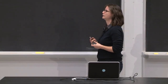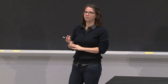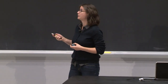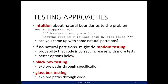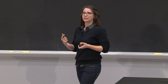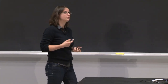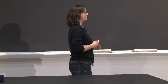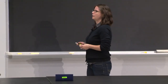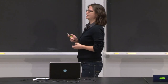What are some testing approaches? The first, most common with programs involving numbers, is figuring out natural boundaries — for example, a function comparing if x is bigger than y has natural boundaries: x less than y, x greater than y, x equal to y. If there are no natural partitions, you might do random testing — the more random testing you do, the greater the likelihood your program is correct. There are also two more rigorous approaches: black box testing and glass box testing.